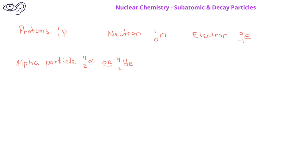Another common decay particle is the beta particle. The beta particle is like an electron, but it comes from the nucleus. In this case, we use a lowercase Greek letter beta with a 0 for the mass number and a negative 1 for the atomic number.